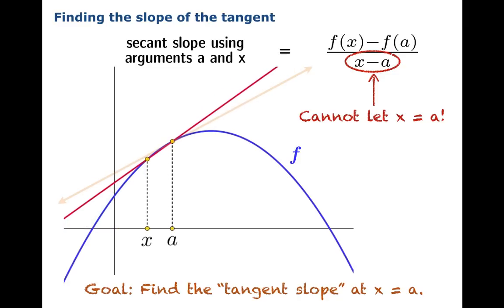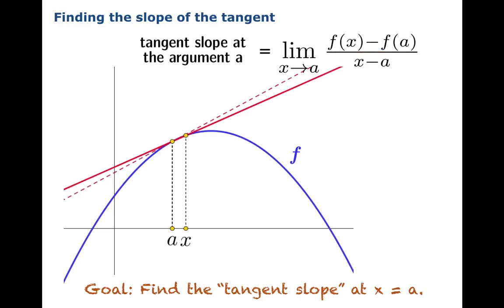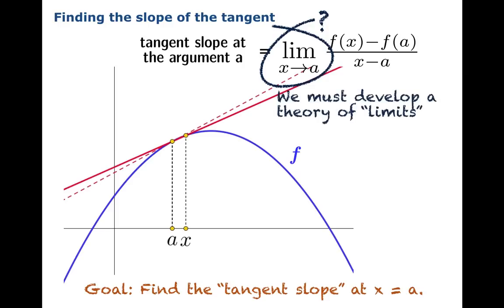We can sneak up from the left as well. Either way we sneak up, we're getting these slopes that look a lot like the one we want, but we can't just evaluate it when x equals a. So we're going to have to do something subtle. We're going to have to somehow sneak up on the number we're looking for without actually getting there. And the official way to do this is through a gadget called a limit. So the tangent slope is going to turn out to be the limiting value as x approaches a of the secant slope. This gadget is a new mysterious thing that we're going to have to develop a theory for.